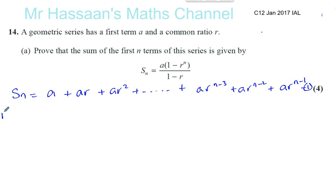So we have R times Sn equals, now you'll get AR in this position, plus AR squared, plus AR cubed, plus, and you'll have here AR to the power of n minus 2, plus AR to the power of n minus 1, plus AR to the power of n. Because if you multiply AR to the power of n minus 1 by R, you have to add 1 to the power.